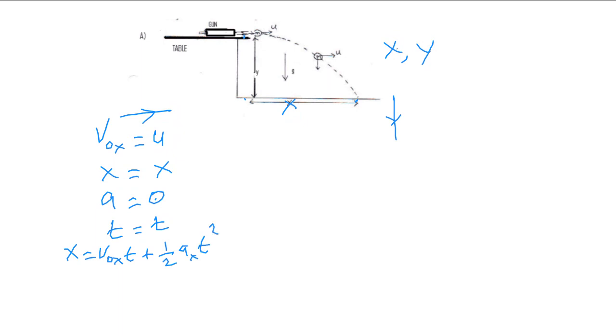Because a is zero, this is zero, so the whole thing is zero. Basically you see that X is equal to V naught X which is U times T. So U is going to be just X divided by T. What we are going to do is find the time T from the Y motion.